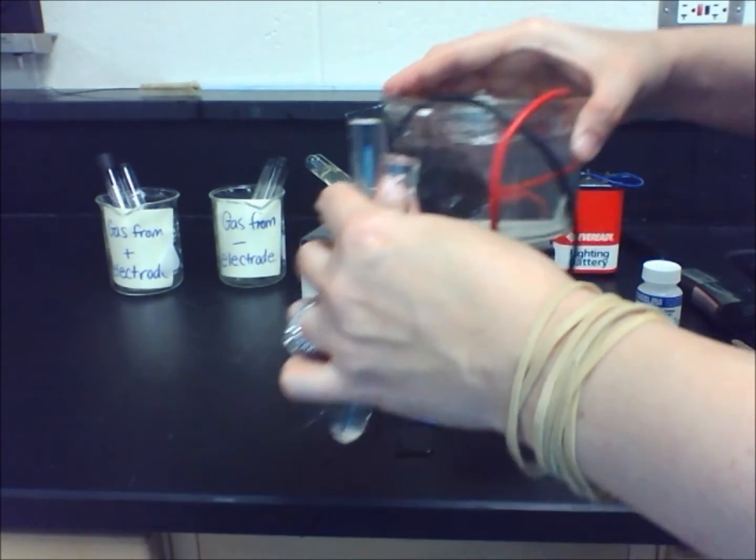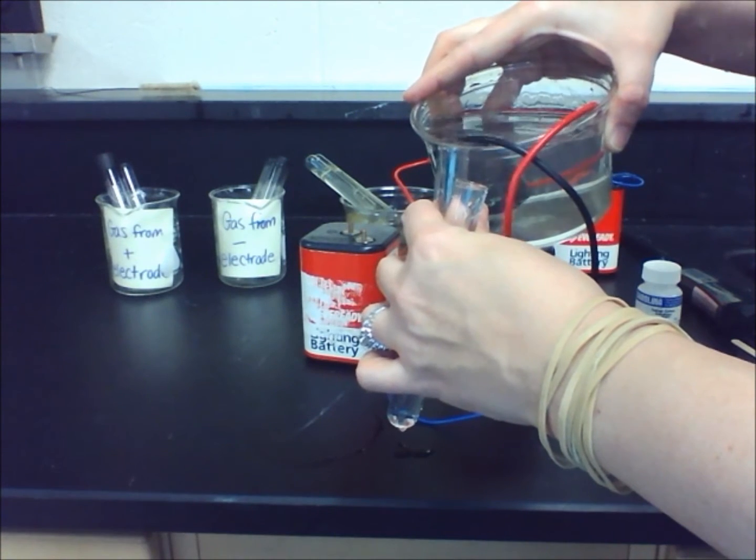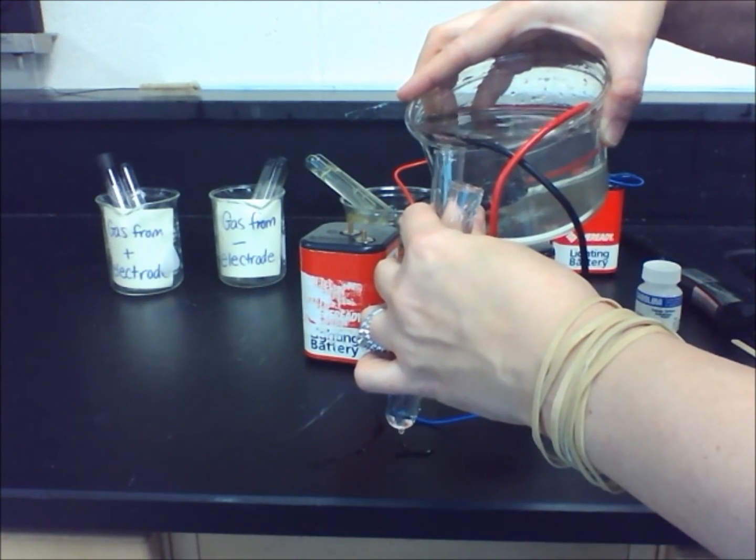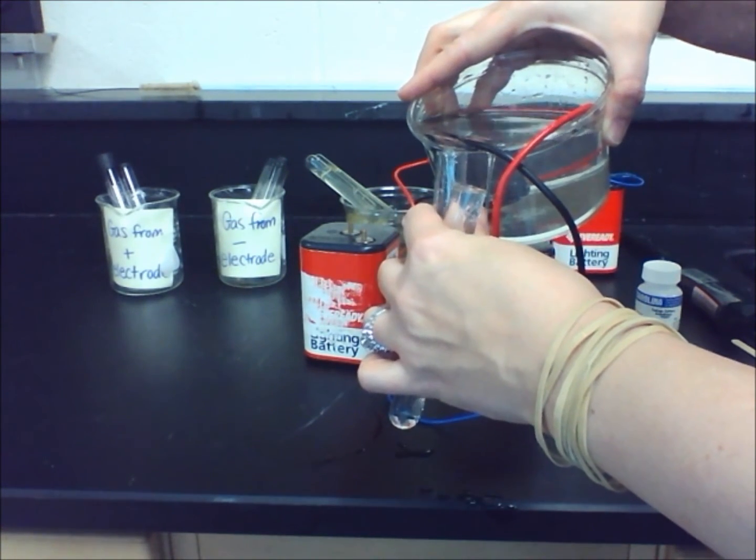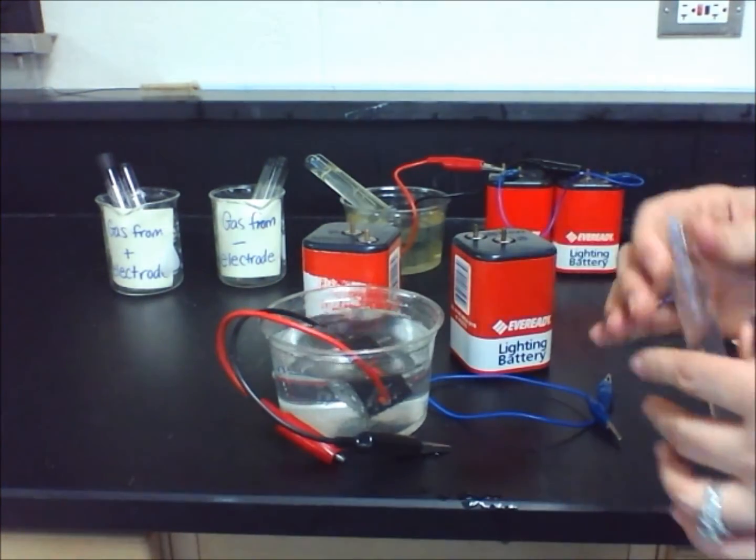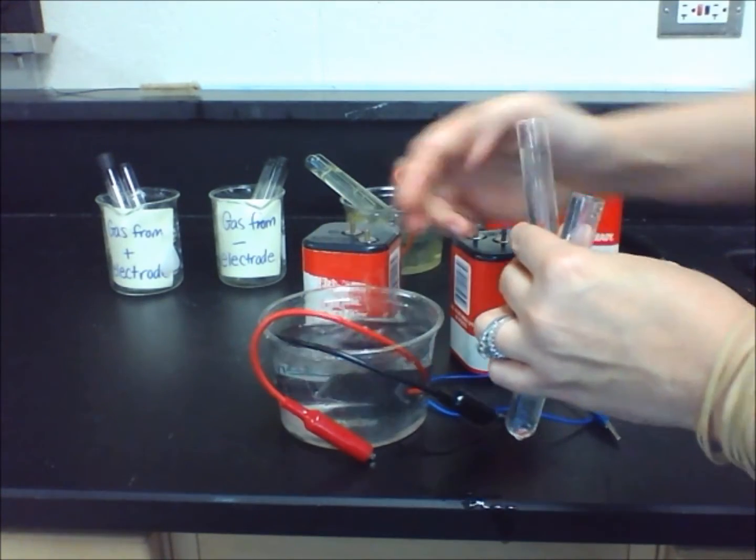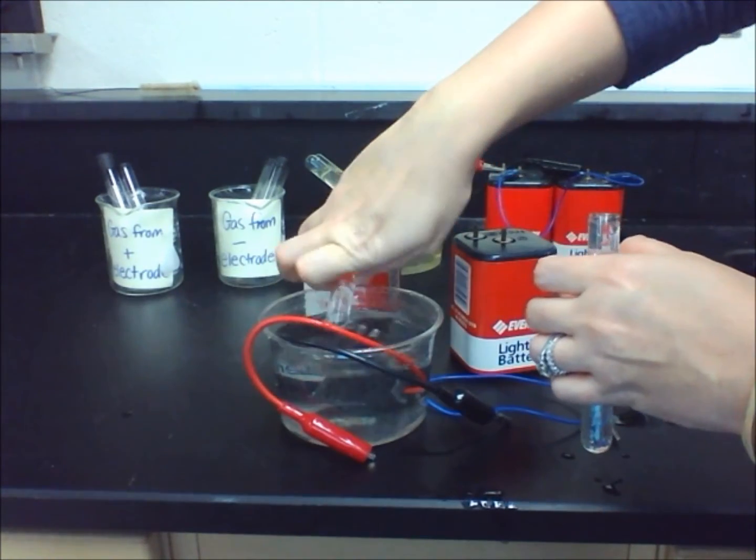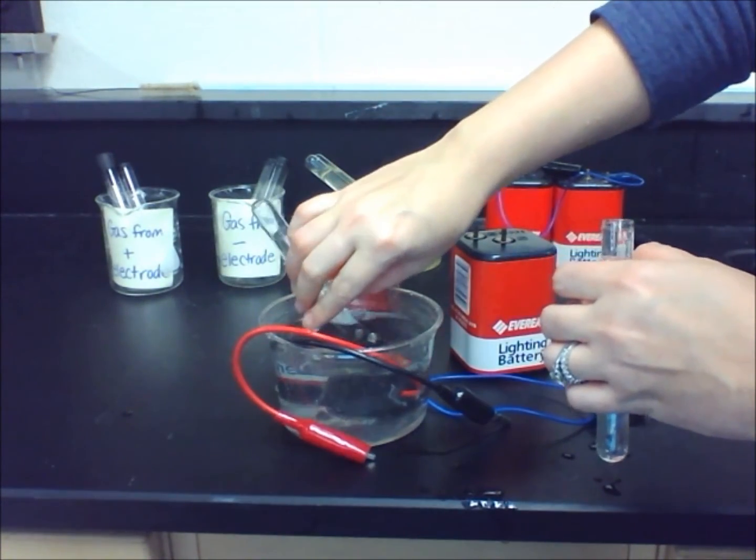Then, fill one of the test tubes with water from the sodium sulfate solution. Place your thumb over the top, making sure the open end of the tube is below the liquid, and place it over one of the electrodes. The tube must still be full of liquid. Repeat this with the other tube and placing it over the other electrode.